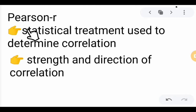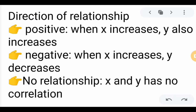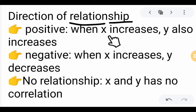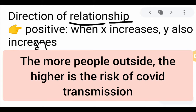Pearson R is a statistical treatment used to determine correlation. It also determines the strength and direction of correlation. For direction of relationship, there are three types: positive, negative, and no relationship. For positive correlation, when the x variable increases, the y variable also increases. For example, the more people outside, the higher the risk of COVID transmission.